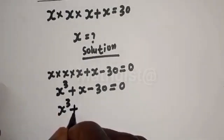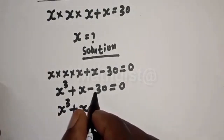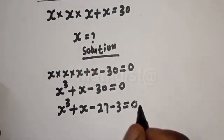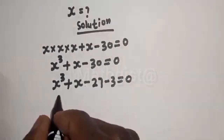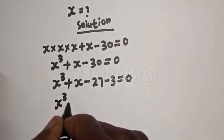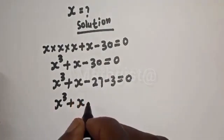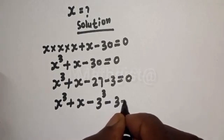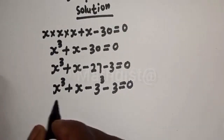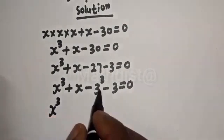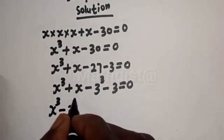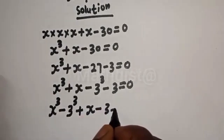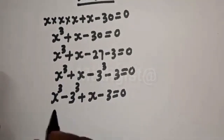s³ + s − 30 can be written as s³ + s − 27 − 3 = 0, since 30 = 27 + 3. Then s³ minus 3³, plus s minus 3, equals 0. We compare: s³ minus 3 raised to power 3, plus s minus 3, equals 0. Take note of the exponential rule.